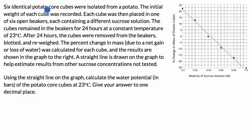Six identical potato core cubes were isolated from a potato. The initial weight of each cube was recorded. Each cube was then placed in one of six open beakers, each containing a different sucrose solution. The cubes remained in the beakers for 24 hours at a constant temperature of 23 degrees Celsius. After 24 hours, the cubes were removed from the beakers, blotted, and re-weighed. The percent change in mass, due to a net gain or loss of water, was calculated for each cube. And the results are shown in the graph to the right.